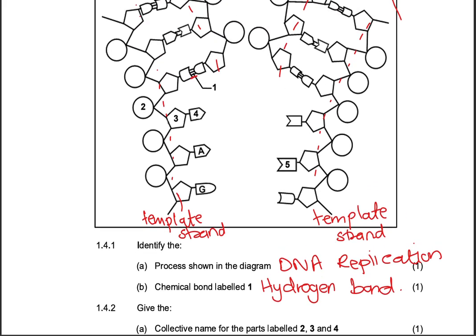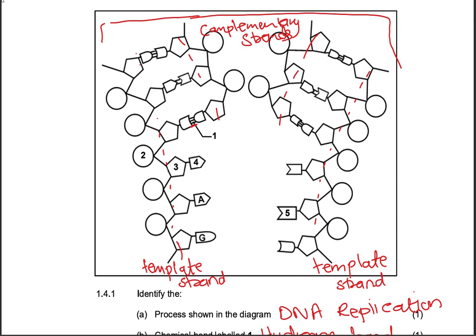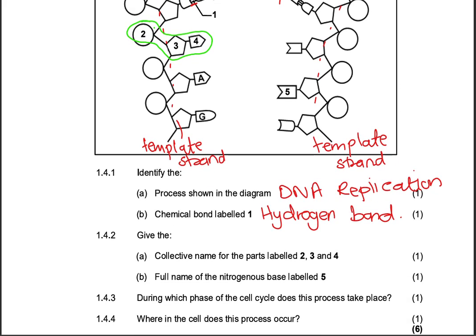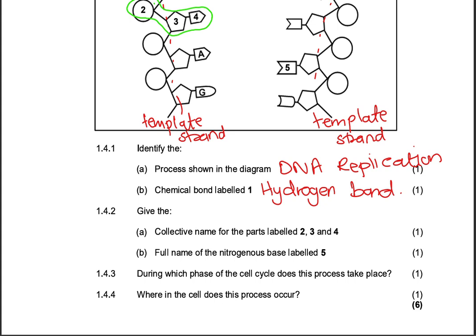All right, 1.4.2, give the collective name for the parts labeled 2, 3, and 4. Collective name for the parts labeled 2, there is 2, 3, and 4. We know the collective name is the nucleotide. Nucleotide is basically a monomer of nucleic acids, obviously made up of a phosphate group, a pentose sugar, and nitrogenous base. So the collective name is nucleotide.